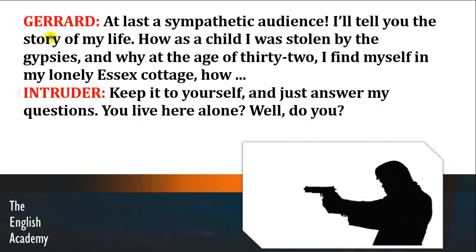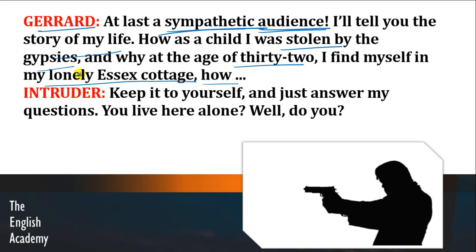Gerard says: 'At last, a sympathetic audience.' Sympathetic means koi insaan jo uske saath sympathize kar raha hai, aur audience means sunne wala. Toh Gerard intruder ko keh raha hai — haan, finally mujhe aisa insaan mila jo meri baat sunna chahta hai. 'I tell you the story of my life — how as a child I was stolen by the gypsies, and why at the age of 32 I find myself in my lonely Essex cottage.' Gypsies means nomads — aise log jinka koi ghar nahi hota, jo idhar se udhar travel karte rehte.